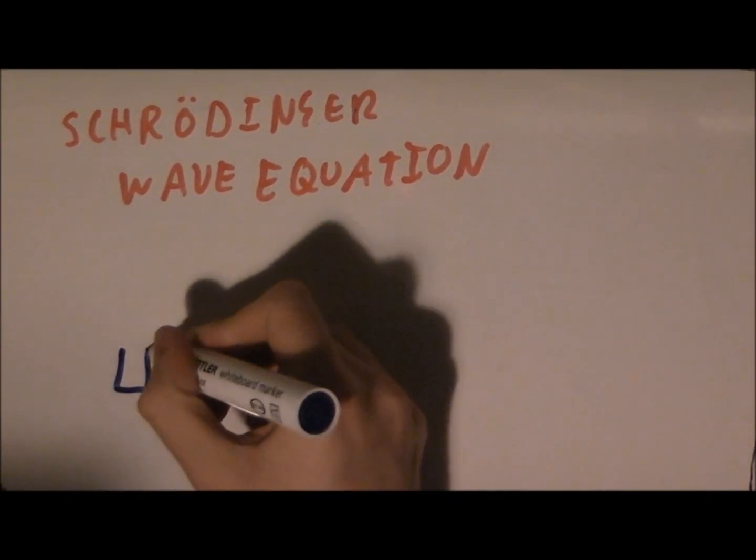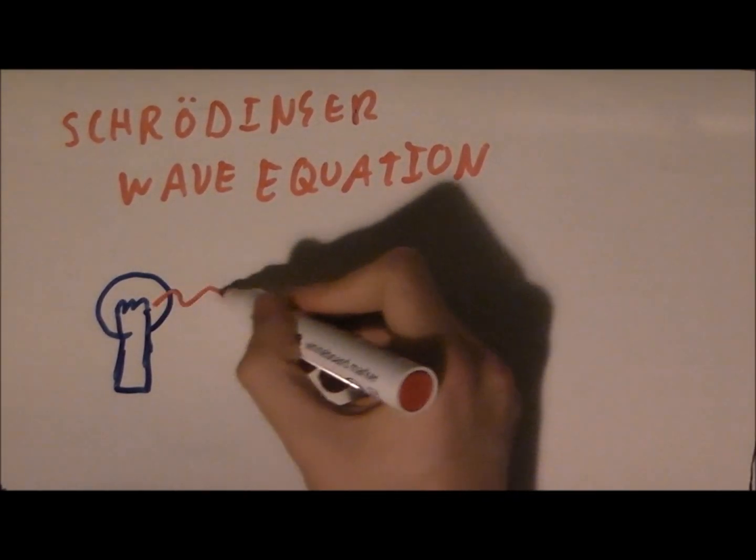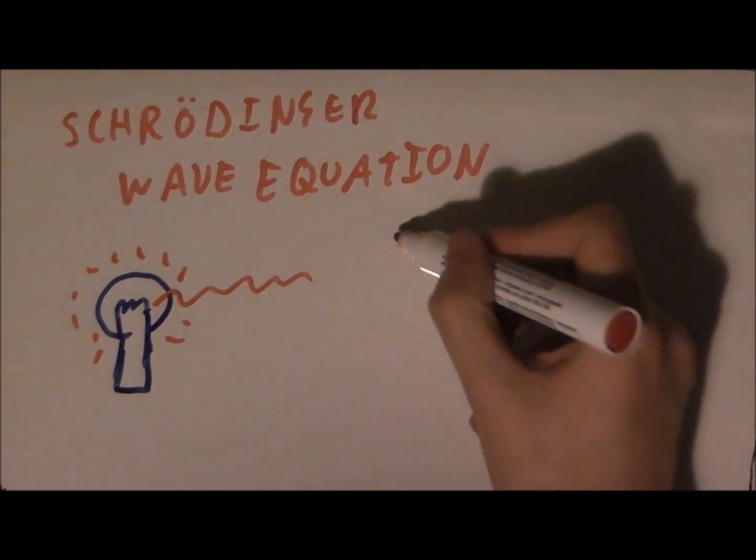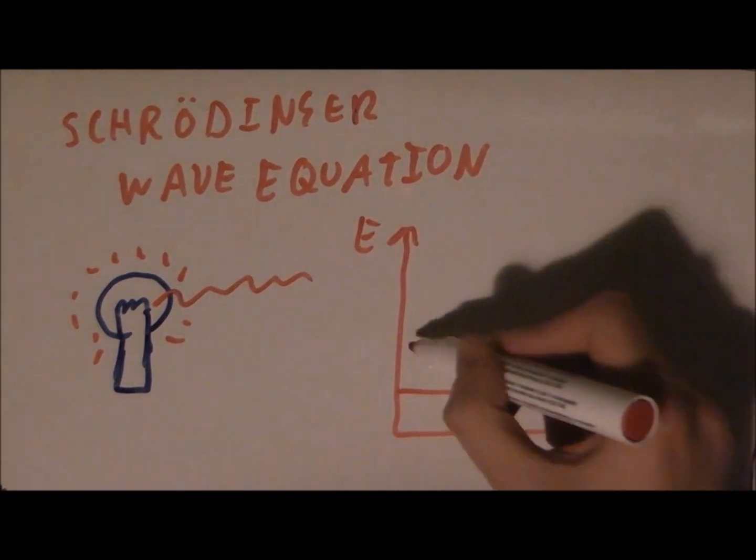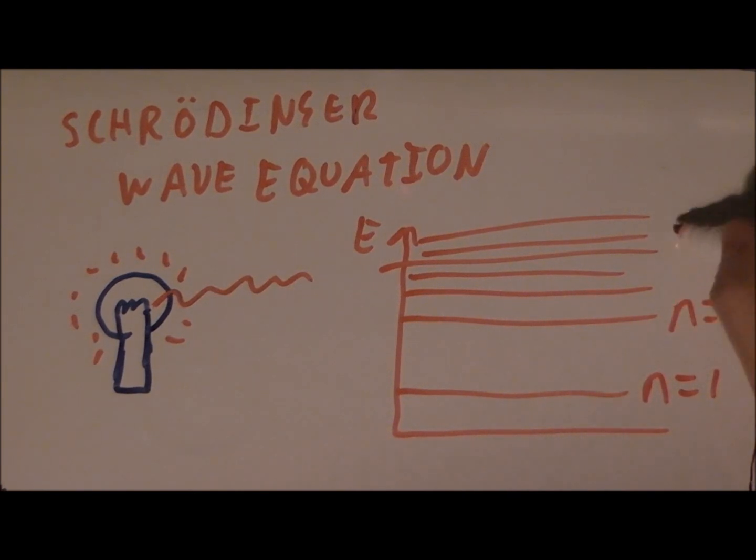The Schrödinger equation is all about energy, finding the different energies a particle can have. Yup, that's energies. We're looking at things which have more than one answer. If you did a bit of quantum physics at school, you might remember that atoms, and indeed all particles, have energy levels. The Schrödinger wave equation lets us calculate what these energies are.